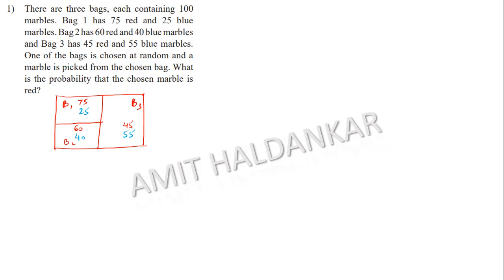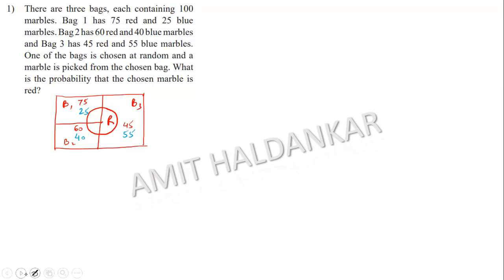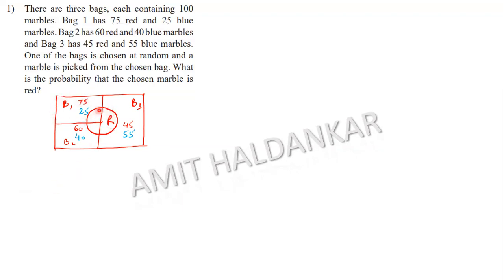One of the bags is chosen at random and a marble is picked from the chosen bag. What is the probability that the chosen marble is red? I'm considering another event R — when I select any one of the bags, I can select B1, B2, or B3, and I get a red marble in three ways.